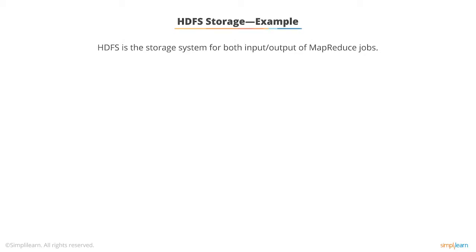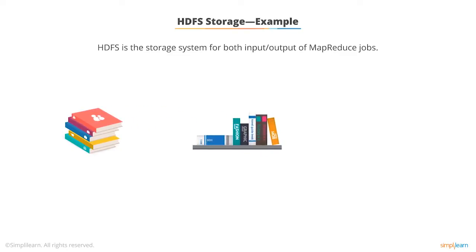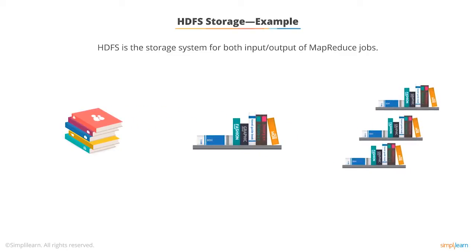Let's understand how HDFS stores files with an example. A patron gifted a collection of popular books to a college library. The librarian arranged the books on a small rack and then distributed multiple copies of each book on other racks, so students could easily pick a book from any rack. Similarly, HDFS creates multiple copies of a data block and keeps them in separate systems for easy access.